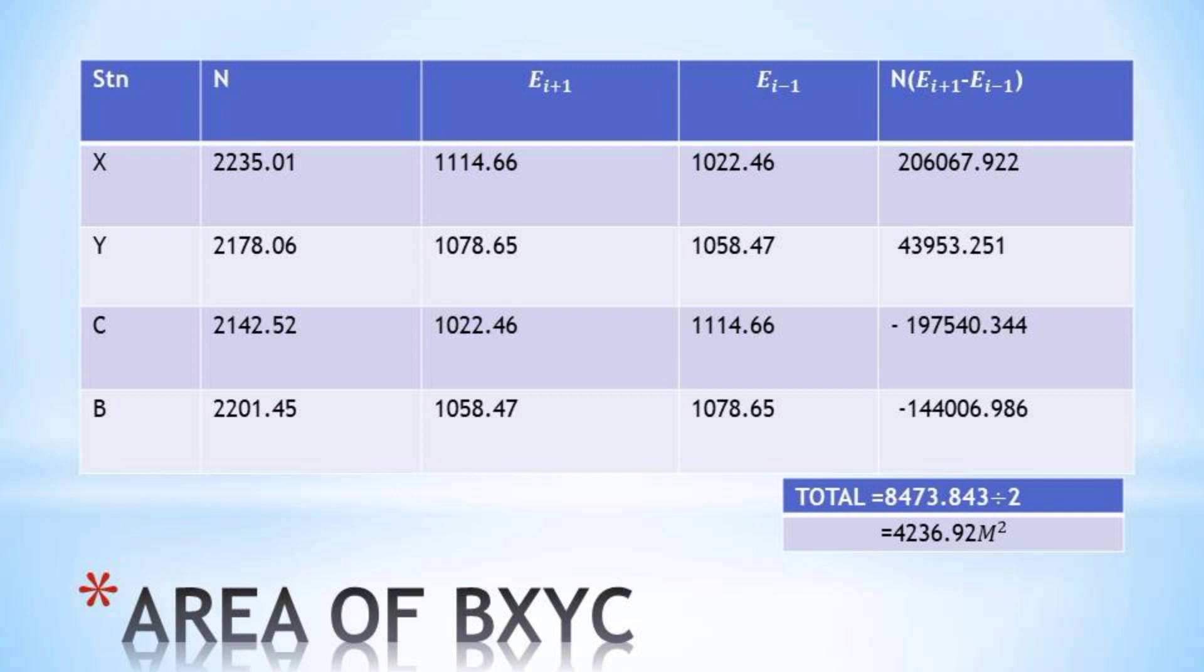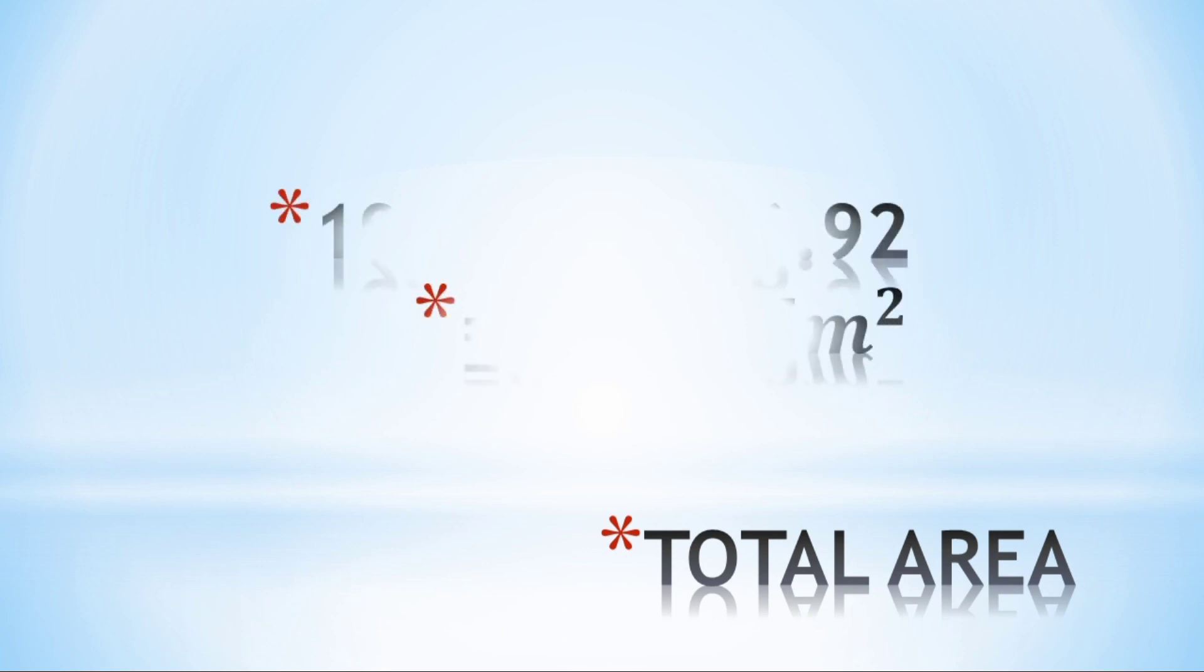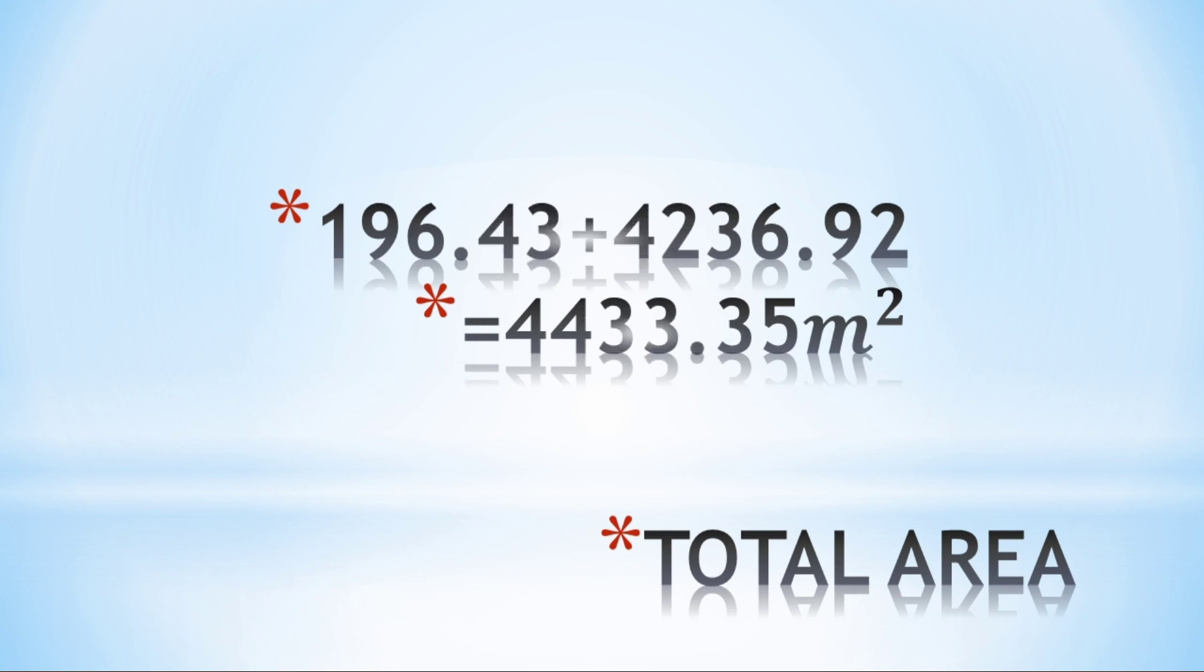The same will be done to C and point B. After having done that, we sum the total. If we found a negative, we'll take the absolute value. After that, we'll divide by two. Having divided by two, we have the area of BXYC. Finally, we add both the areas from the irregular shape and the rectangular shape, getting our final answer in hectares.